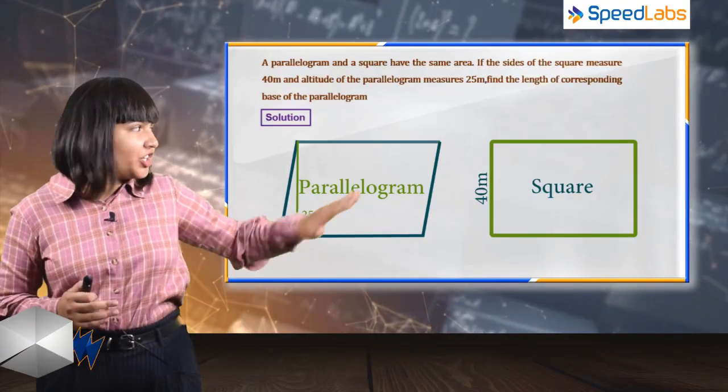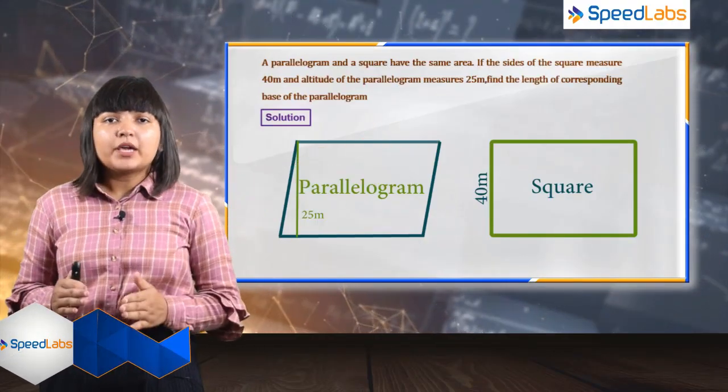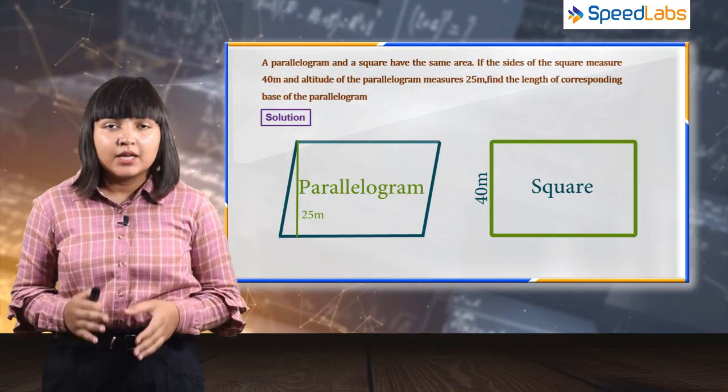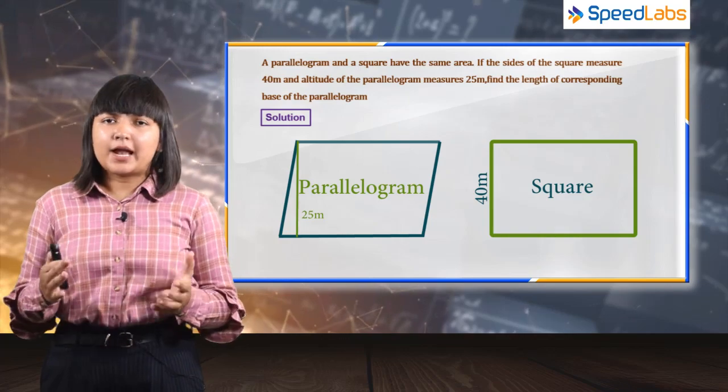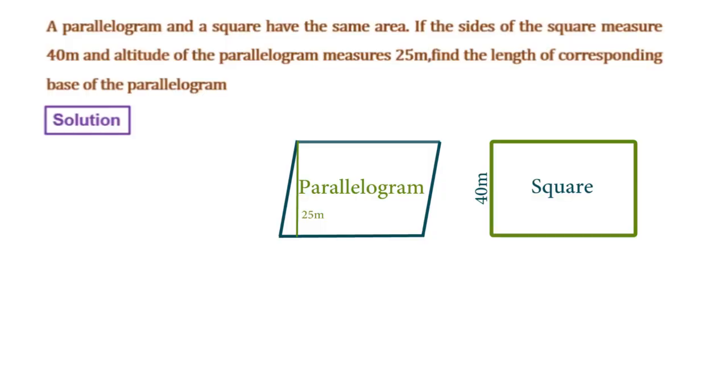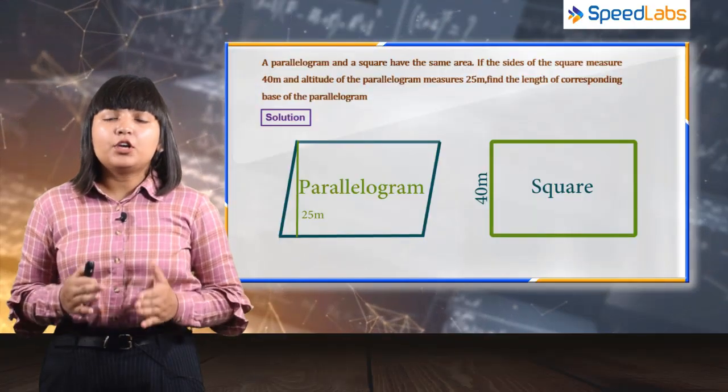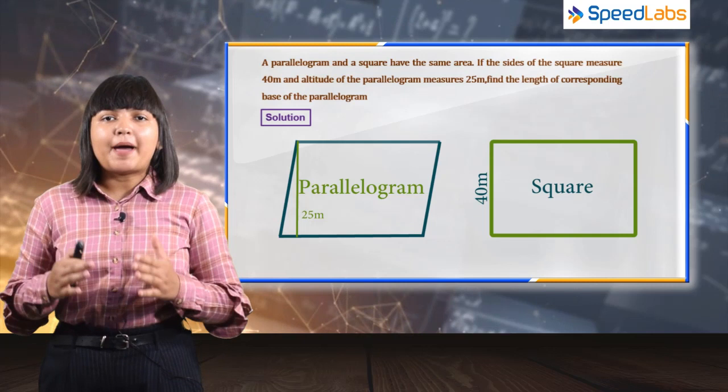In this question which can be seen here, you are given a square and a parallelogram such that both have equal area. You are also given the side length of the square, that is 40 meters, and the parallelogram has an altitude of 25 meters. You need to find the length of the corresponding base for the parallelogram.